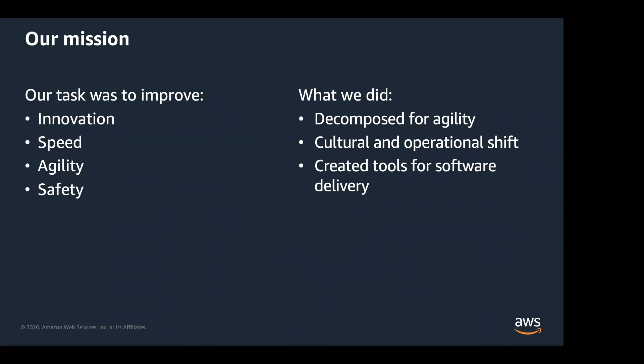We knew we needed to improve this, so we set out on different missions: we wanted to innovate, gain speed, agility, and safety. By safety, we meant that when you do a deployment to production, we wanted to make sure that if anything breaks or any bugs are introduced, we could roll back quickly and safely. How we gained these things was by decomposing for agility, doing cultural and operational shifts - including Amazon's two pizza teams - and creating tools and software to help with delivery.